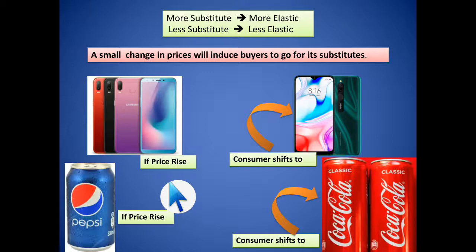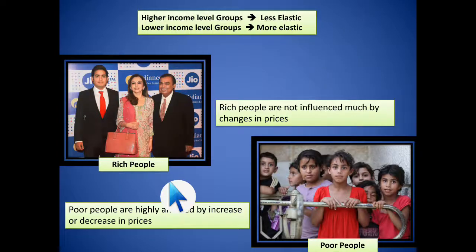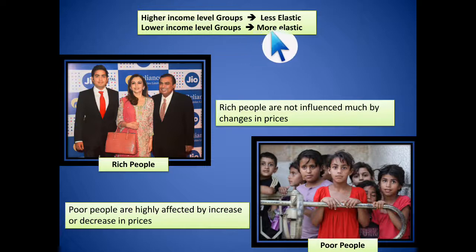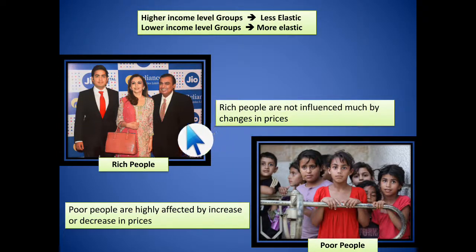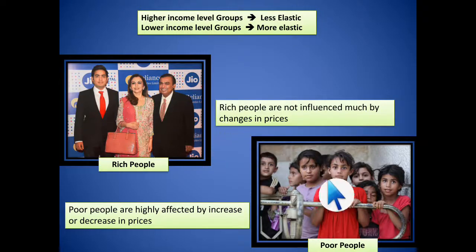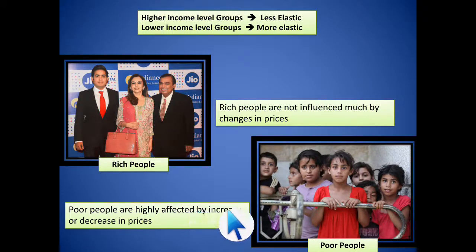For a commodity with no substitute, even if price increases or decreases, people will still buy it because there is no other option — making it inelastic. The third factor is income level. For higher income groups, demand is less elastic, while for lower income groups it is more elastic. Rich people are not much influenced by price changes and can afford goods regardless, whereas even a small price change significantly affects the consumption behavior of poor or middle-class people.